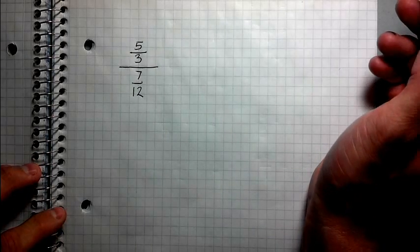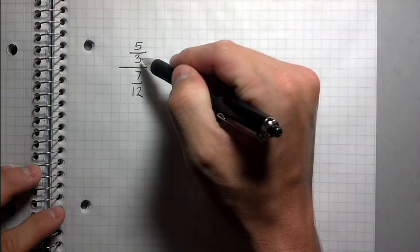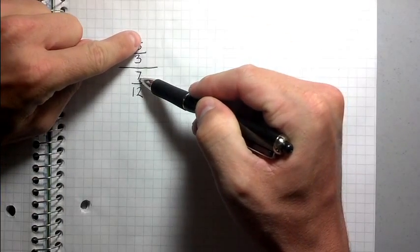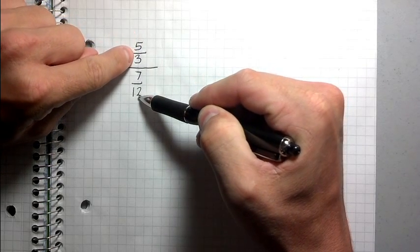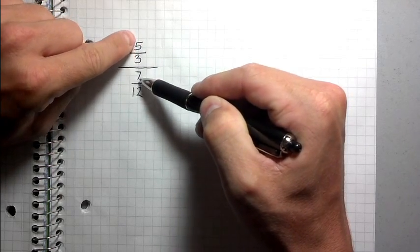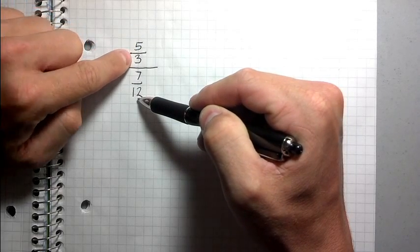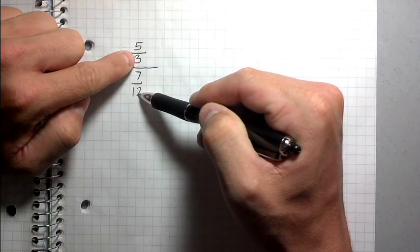So notice something. It turns out that you can actually look at these numbers and you see how five and seven are separated by one space and three and 12 are separated by one space. It turns out that when you're dealing with complex fractions, you can actually cancel factors from numbers that are separated from one space.